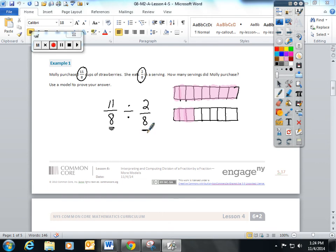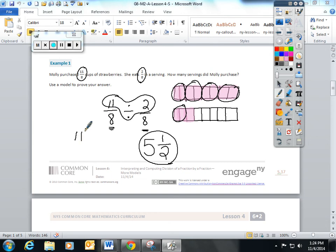And we are trying to see how many groups of 2 eighths fit into 11 eighths. So, there are 1, 2, 3, 4, 5 full groups of 2 eighths, and there is 1 left over out of the groups of 2 that we're looking for. 5 and 1 eighth is going to be your answer. I'm really encouraging students, once the denominators are the same, to circle their numerators. We're really taking 11 and dividing it by 2. 2 fits into 11 5 times. And there is going to be 1 left over out of the 2 that you're looking for, 5 and 1 eighth.